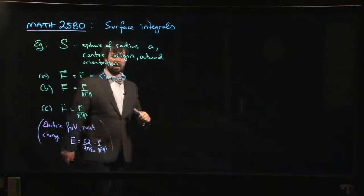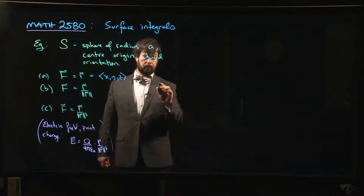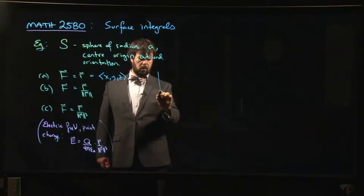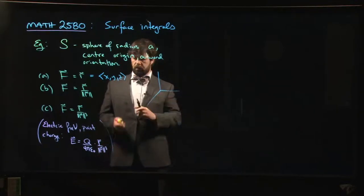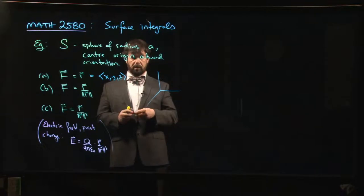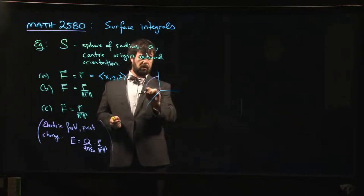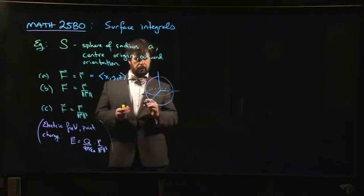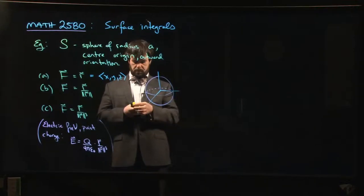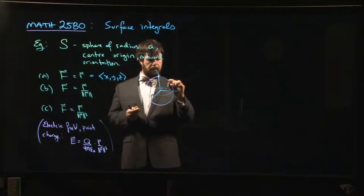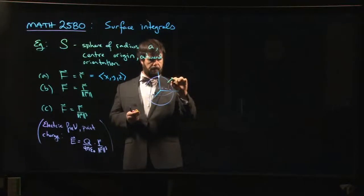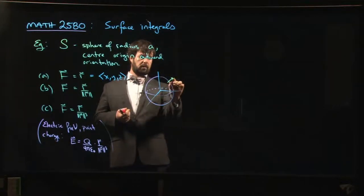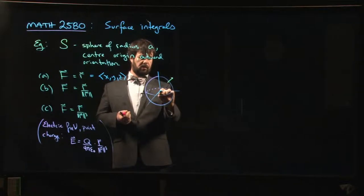The reason I've introduced that is that on a sphere, the radial vector is the normal vector. So here's our sphere, and at any point, the normal vector is the same thing as the vector